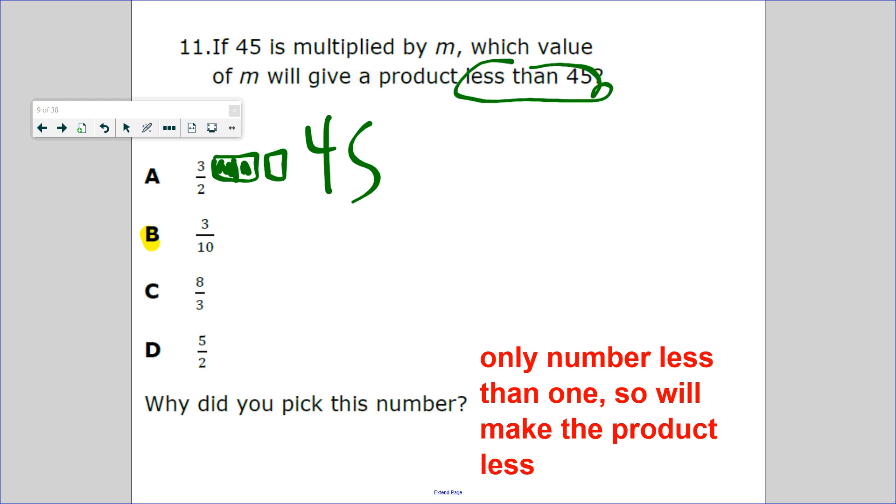8/3: cut into thirds and shade eight of them. That's more than a whole. 5/2: cut in halves. That's more than a whole. So it's B.